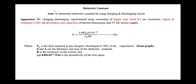In this video we are going to learn the dielectric constant experiment. The aim of the experiment is to determine the dielectric constant by using a charging and discharging circuit. The apparatus we are using in this experiment is a digital stop clock, digital DC voltmeter with range 0 to 20 volts, resistors, capacitors, and a 5 volt DC power supply.